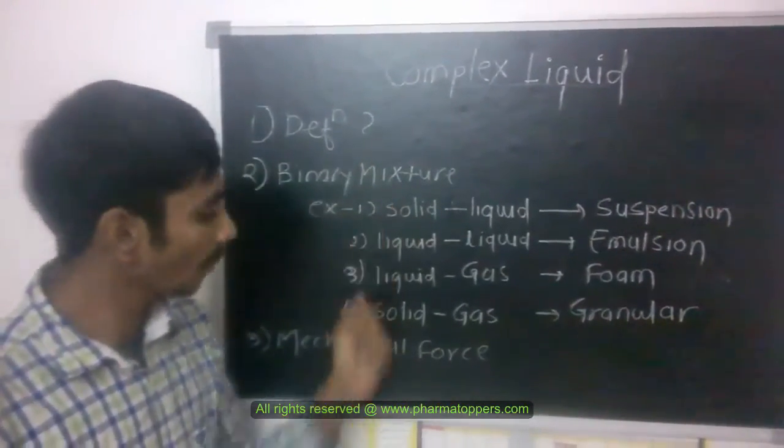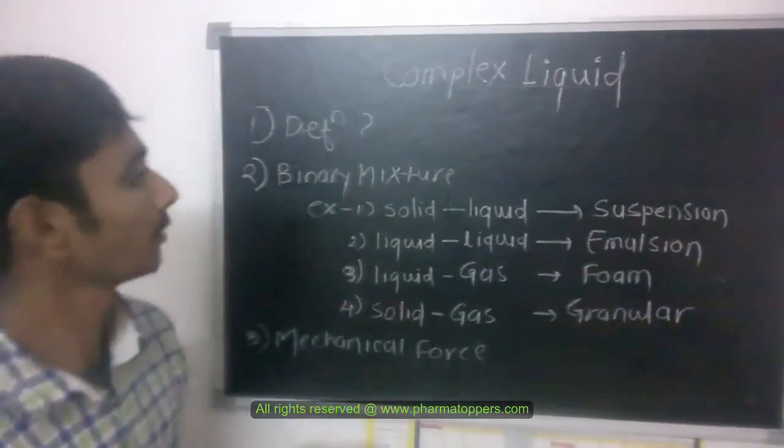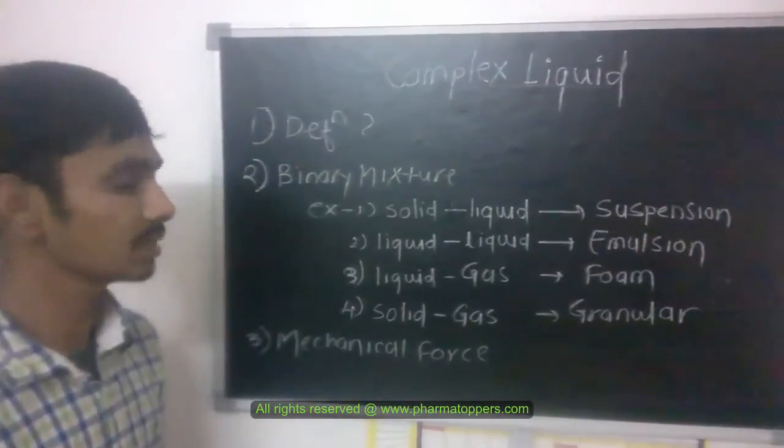These are some common examples of complex liquid, such as solid-liquid, which forms a suspension. Here, one phase is solid and the second phase is liquid.